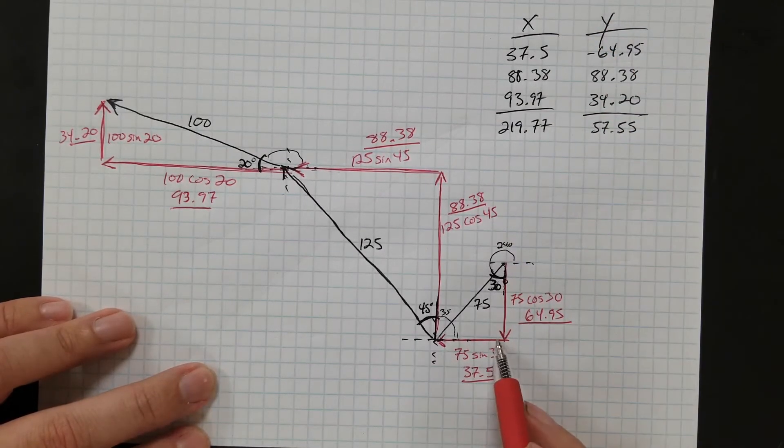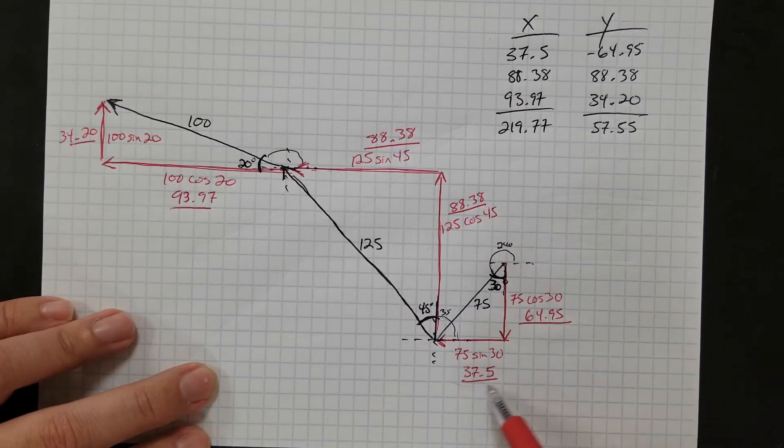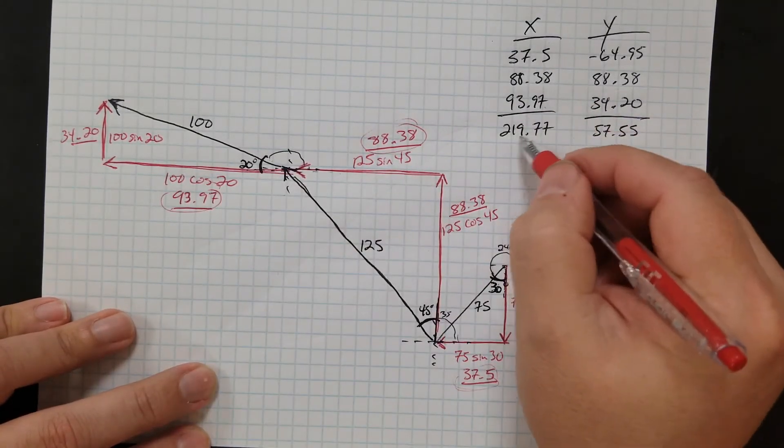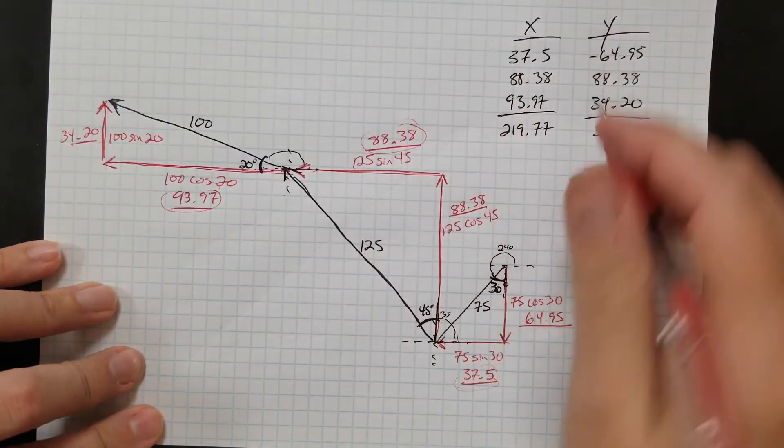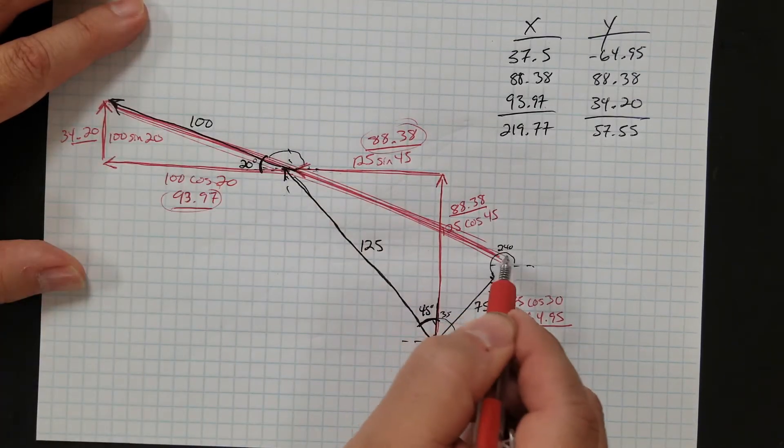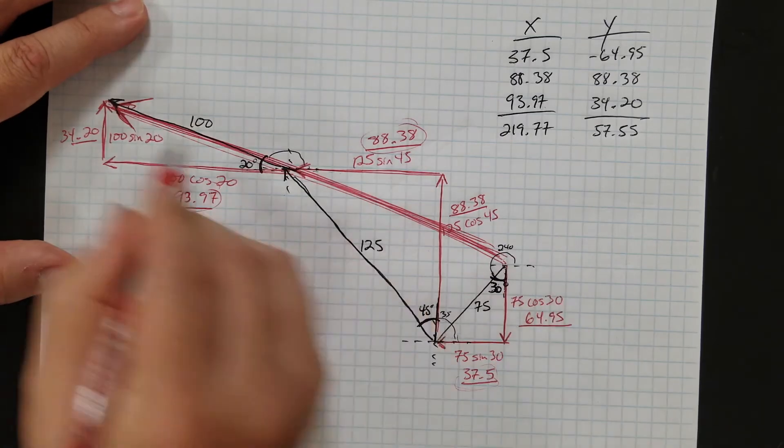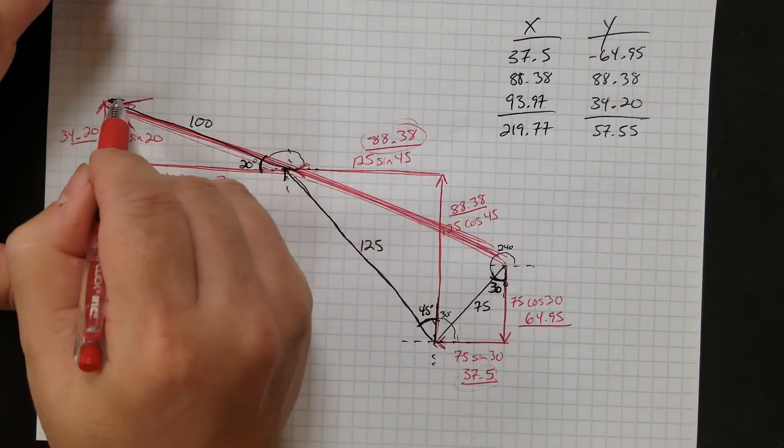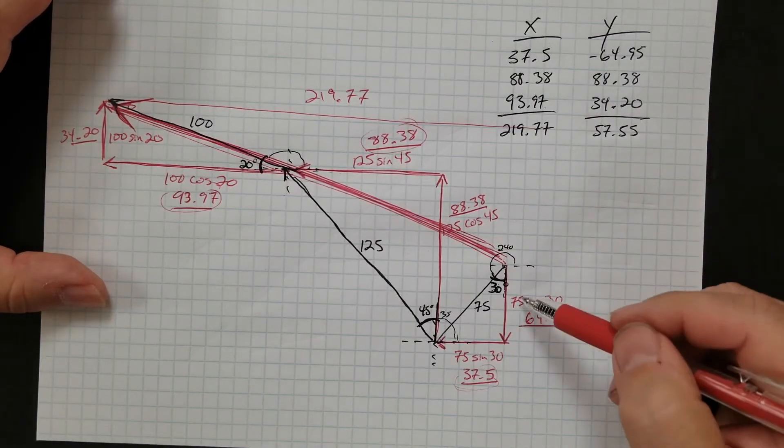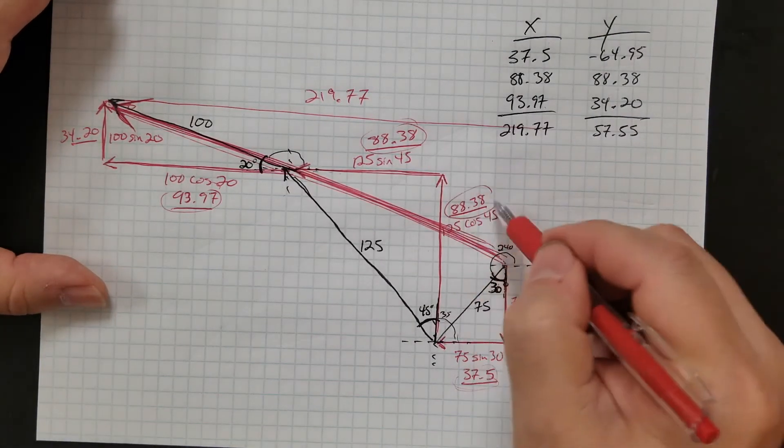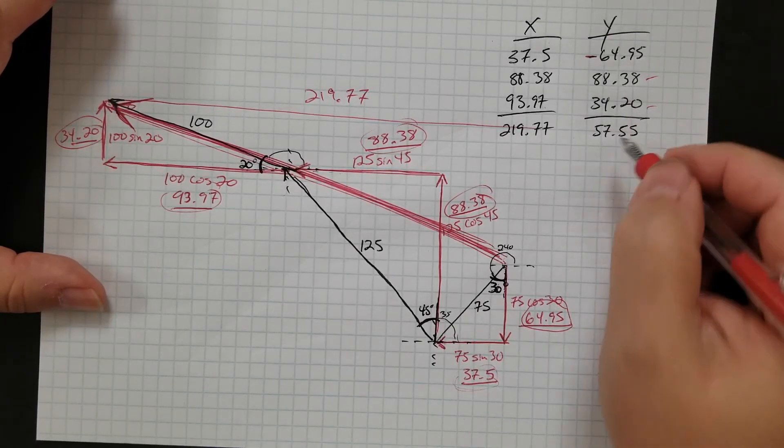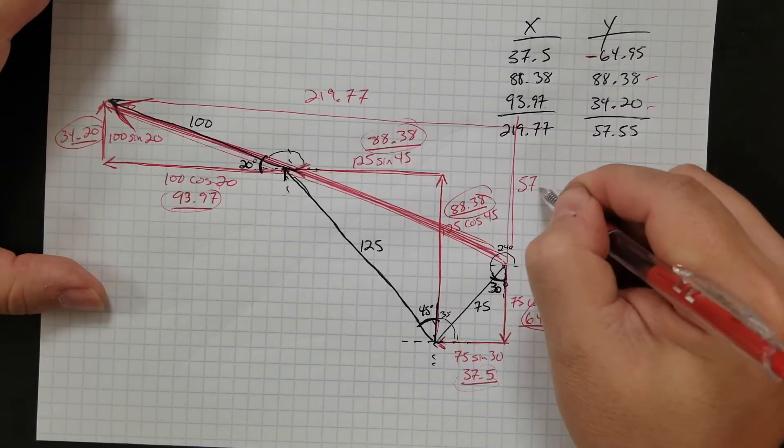So what I've done, my x's were easy, because all of these are going this way. So I didn't have to change any signs. So it's just 37.5 plus 88.38 plus 93.97. My three x components add up to give me 219.77. So my resultant, from start to finish looks like this. I'm going to try to draw it thicker so it looks like a resultant. That's my resultant. My resultant goes 219.77 that way. So that's 219.77. Okay, in the y direction, I had to subtract this one pointing down because my other two point up. So 88.38 goes up and 34.20 goes up, but I had to subtract the 64.95. When I do that, I get 57.55 up. So this is 57.55 up.